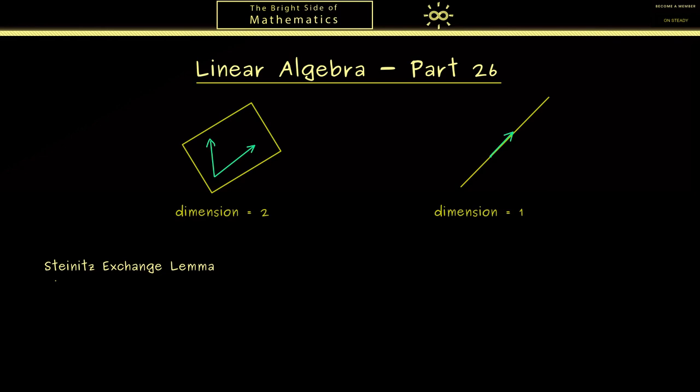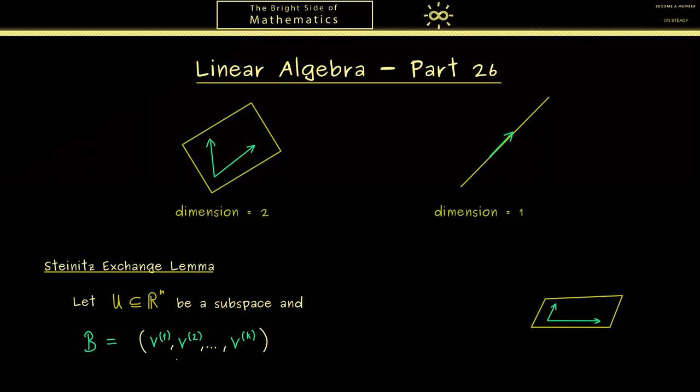Okay, so the first step of today is that we formulate this statement here. There we start with the usual linear subspace U in R^n. So you know, it's a subset of R^n that conserves the linear structure of the vector space. Moreover, now we also assume that we have a fixed basis B of our subspace U. The basis elements in the basis B we call just v^1, v^2 until v^k.